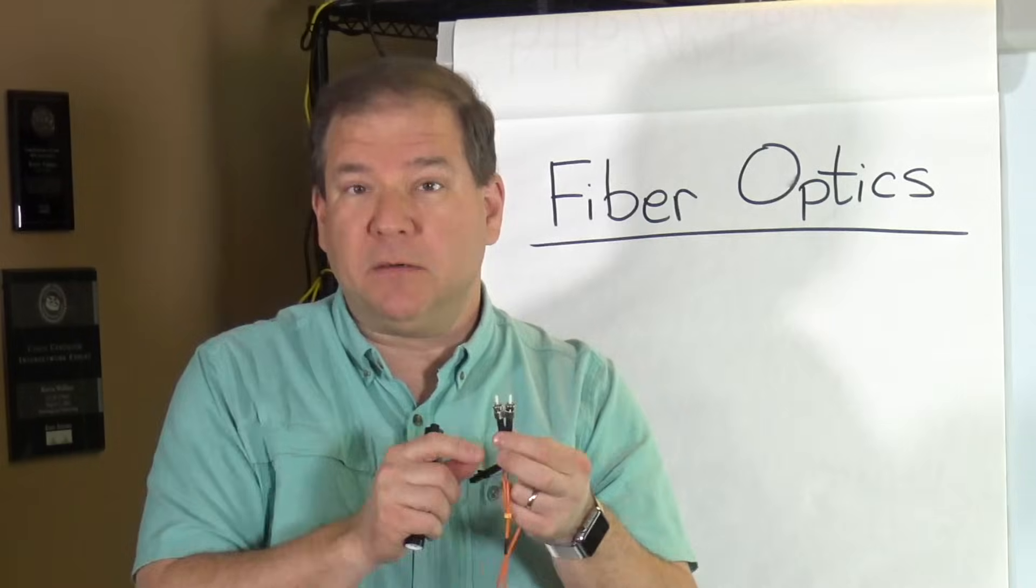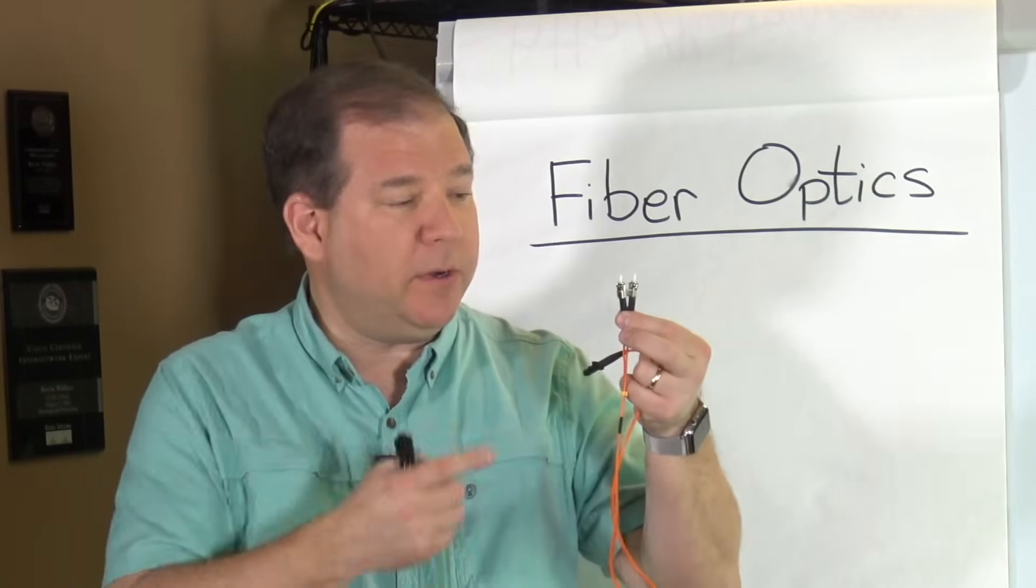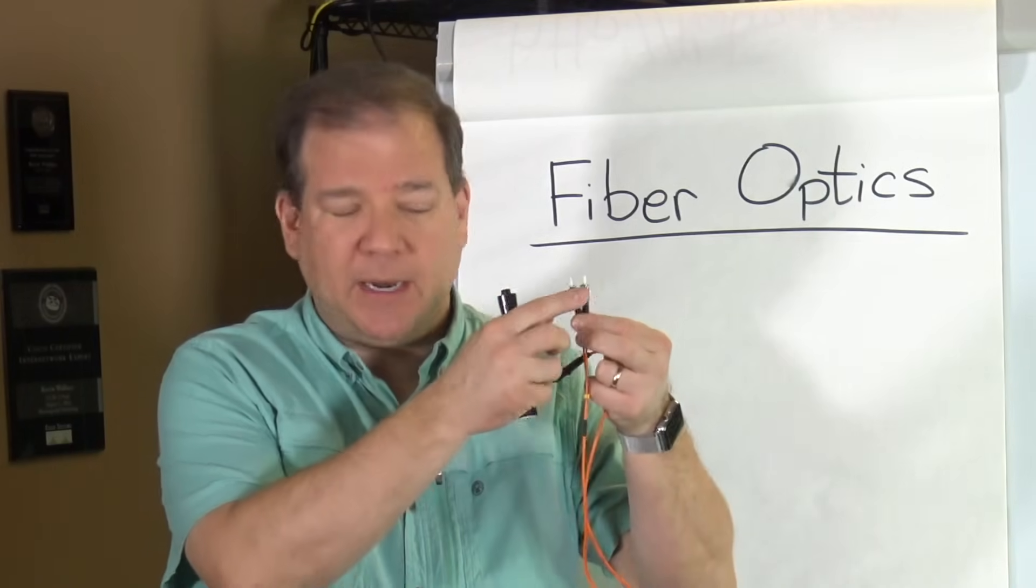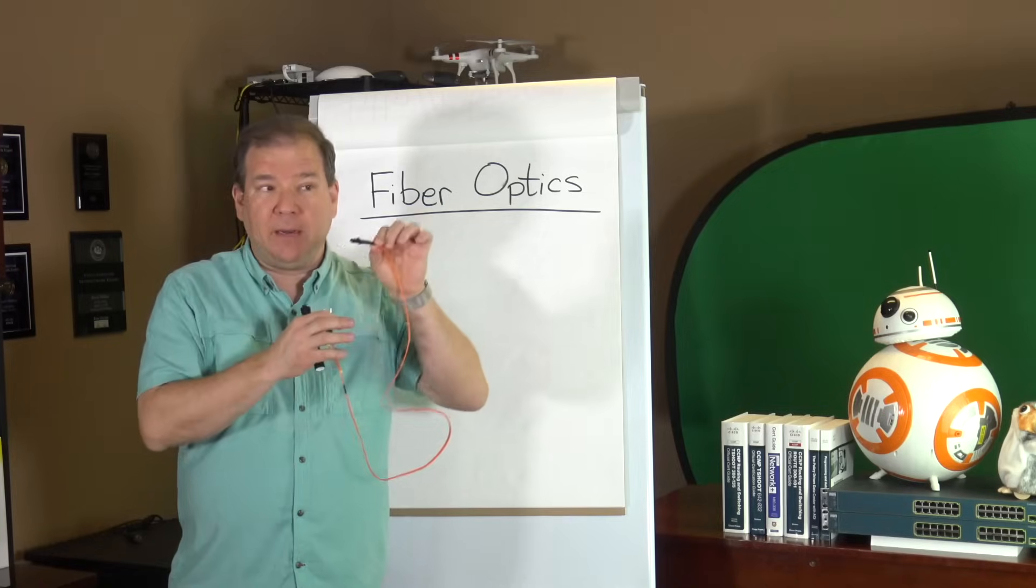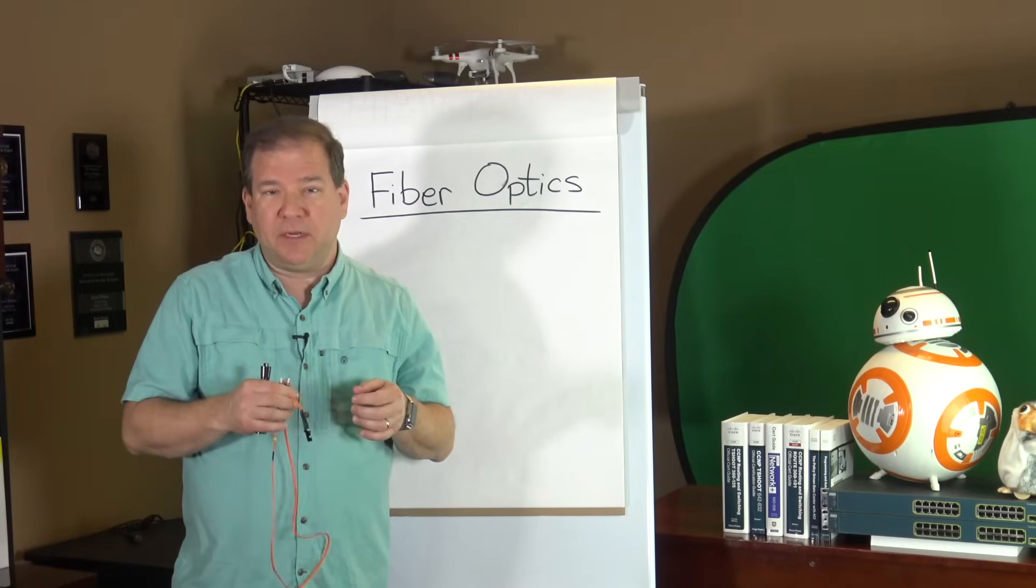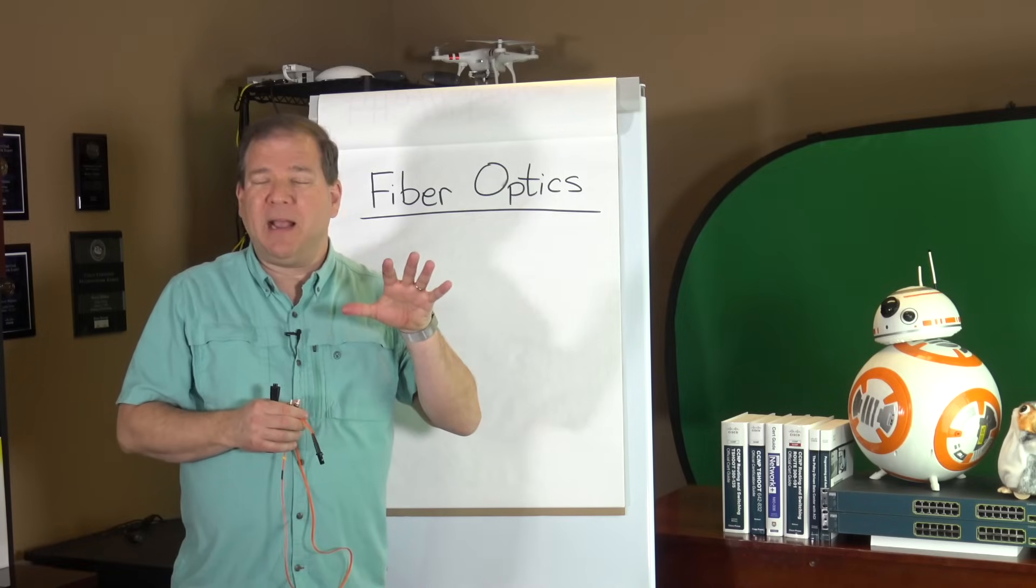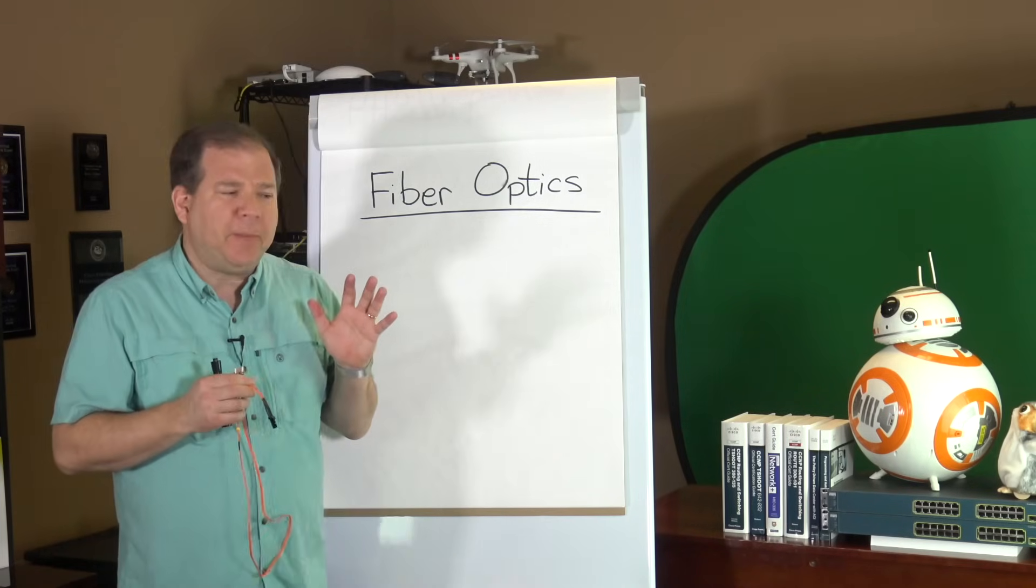By the way, the particular type of connector we have on this jumper is called an ST or a straight tip connector. This is an MTRJ connector, and later on in this video we'll take a look at some of the different types of connectors we might have. But first, let's think about how this really works.